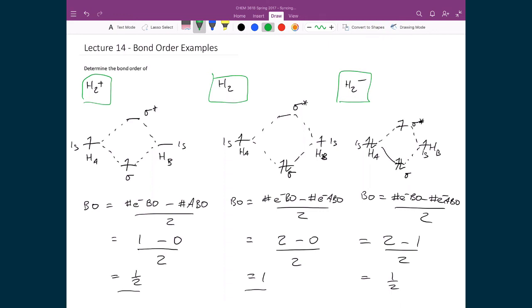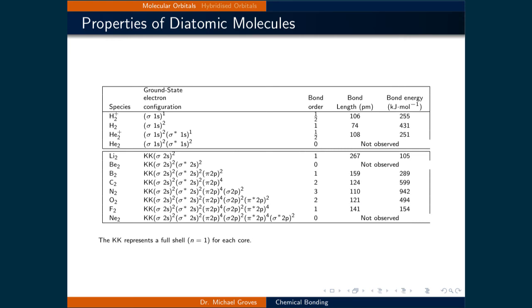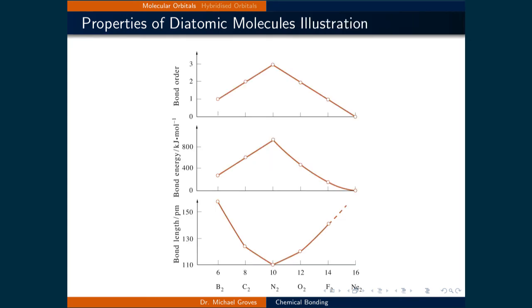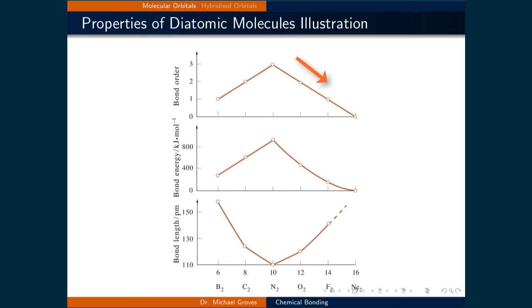Based on the molecular orbital diagram presented earlier, we can create a table that includes the ground state electronic configuration and bond order of each diatomic molecule, along with measured values for bond length and bond energy. When we plot bond order, bond energy, and bond length, we see intuitive relationships: as bond order increases, bond energy also increases and bond length decreases. Conversely, as bond order decreases, so does bond energy, and bond length increases. This demonstrates the qualitative predictive power of bond order based on the quantum mechanical treatment of molecules.